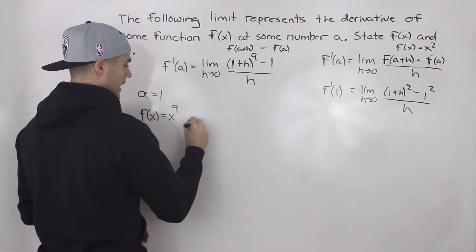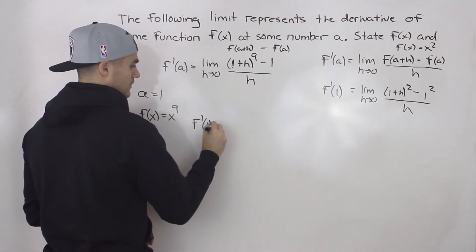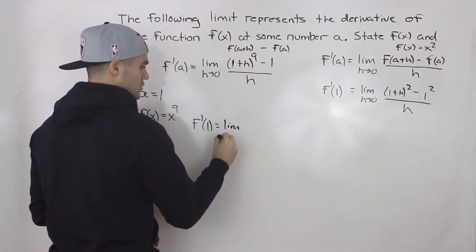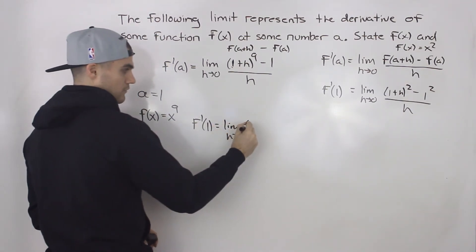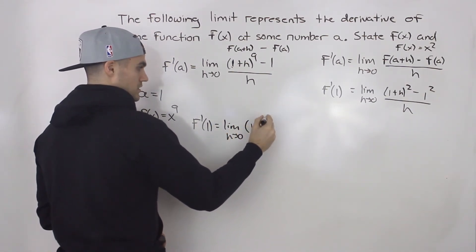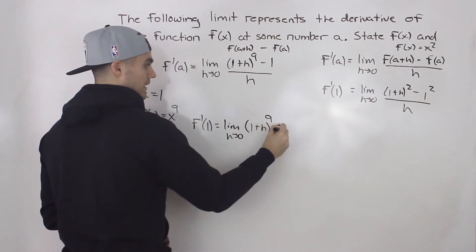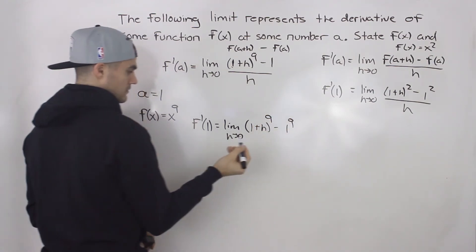Using that general equation, we would have f'(1) equals limit as h goes to 0. And then we would be plugging in 1+h into this function. So we'd have (1+h)^9 - 1^9.